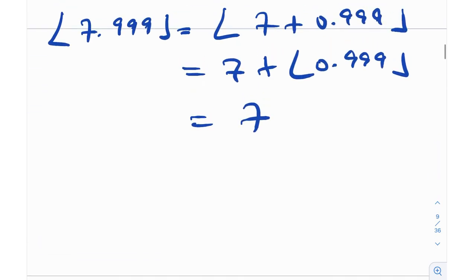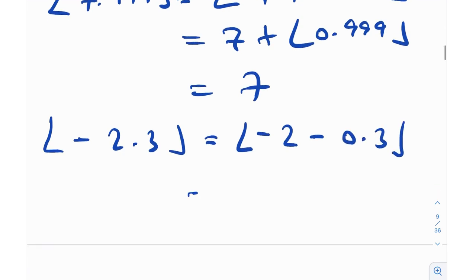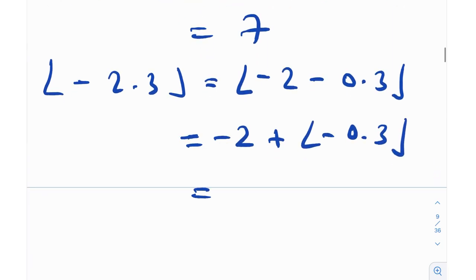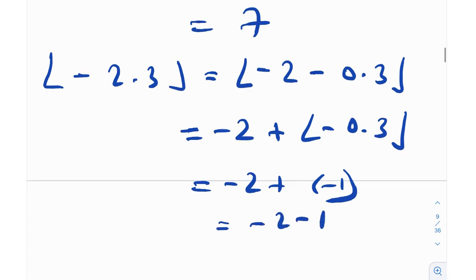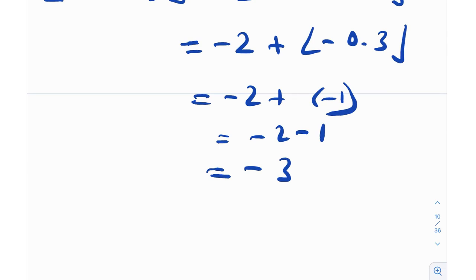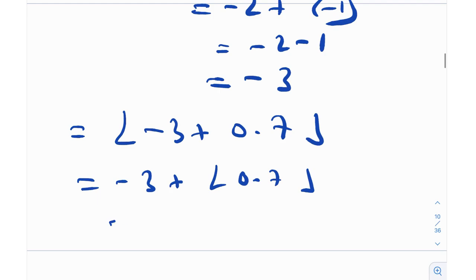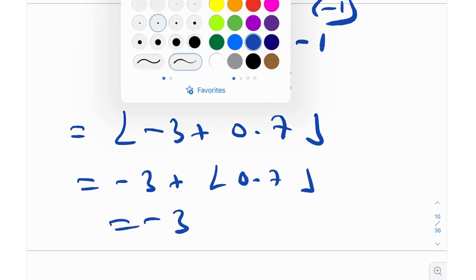This applies to negative numbers as well. For floor(−2.3), which we know is −3: writing it as −2 + (−0.3), the −2 comes out and we add floor(−0.3) = −1, giving −3. Alternatively, floor(−3 + 0.7) = −3 + floor(0.7) = −3 + 0 = −3. Either way we get −3, confirming the property holds.